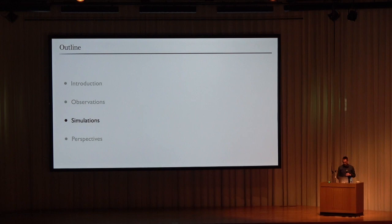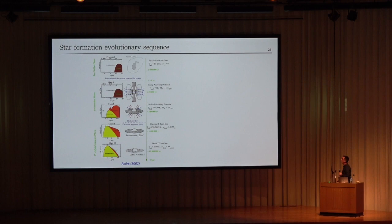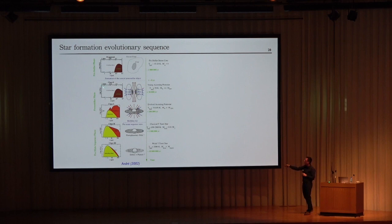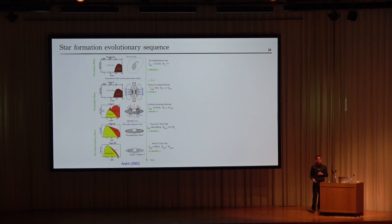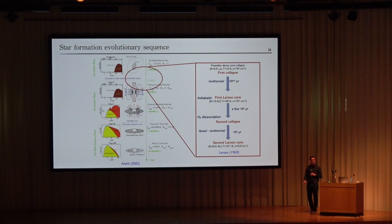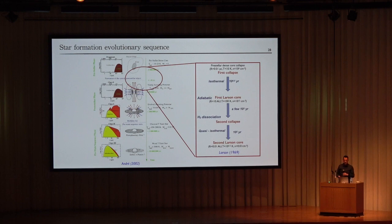Now let's go to the simulation side and review advances in the past 10 years. I remind you of the star formation evolutionary sequence as derived by Philippe André 2002. We will focus on the transition between the pre-stellar and protostellar phases — the class 0 stage, where the mass of the central object is less than that of the envelope. The first step is protostellar collapse, which can be divided into four steps established in the seminal work by Larson in 1969.